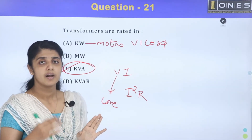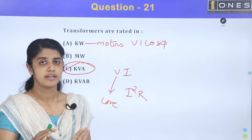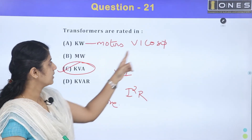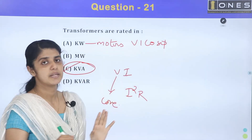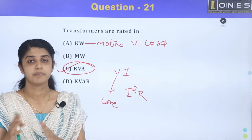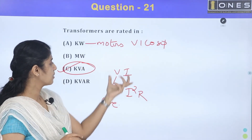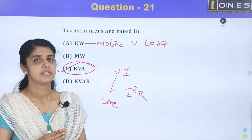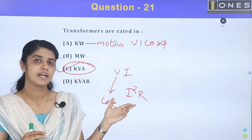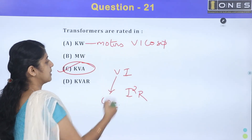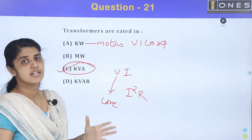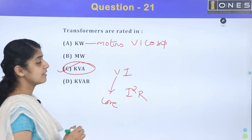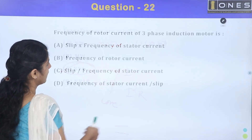What is the angle of the power factor? The power factor angle depends on the load connected to the transformer. The transformer itself does not have a fixed power factor — it depends on the load. Since the power factor is unknown, the transformer is rated in KVA, not KW.